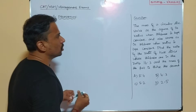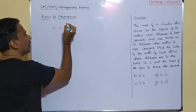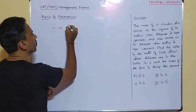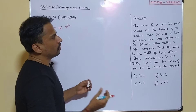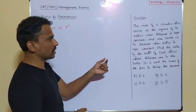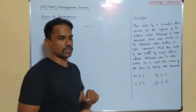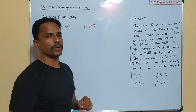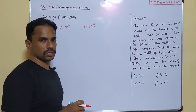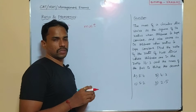Let us clearly note what are all the things given. The mass of a circular disk — I am going to represent mass as M. So M is going to vary as the square of the radius, which I'll write as R squared. I am going to notate radius as R. And also the same mass is going to vary as thickness when the radius is kept constant. I am going to represent thickness as T. So M is proportional to R squared, and M is proportional to T.